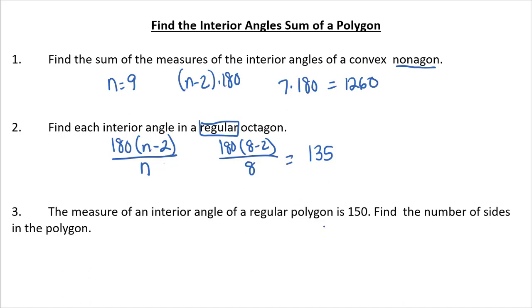The measure of each interior angle of a regular octagon is 150. Find the number of sides. So now I'm looking for n. I know each interior angle of a regular octagon, so I'm going to use this formula here. So here, I'm going to multiply by n on both sides, and I'm going to distribute on the other side at the same time. I'm going to subtract the 180 over to get negative 30n equals negative 360, and n is equal to 12.